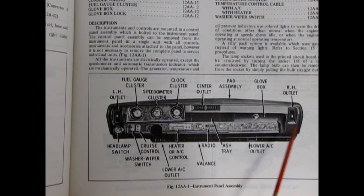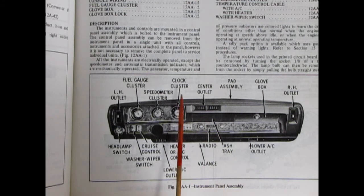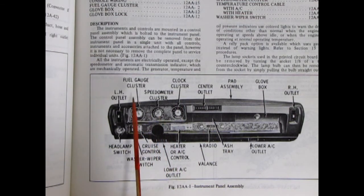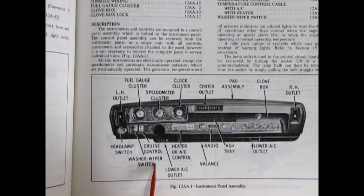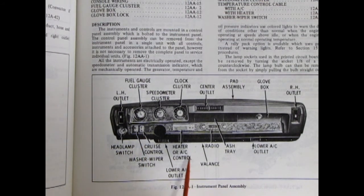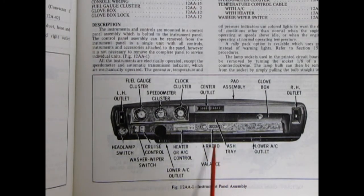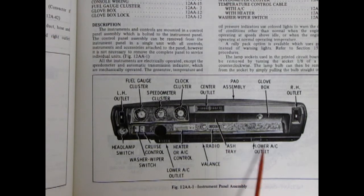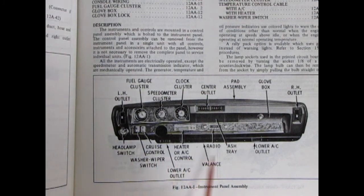The left hand outlet, right hand outlet, glove box, pad assembly, center outlet, clock cluster, speedometer cluster, fuel gauge cluster, headlamp switch, washer wiper switch, cruise control that would be optional, your heater or AC control, your lower AC outlet if you have air conditioning, radio, the undervalance here, your ashtray, and your lower AC outlet. As you can see with our plastic components this thing is dead accurate on the model.